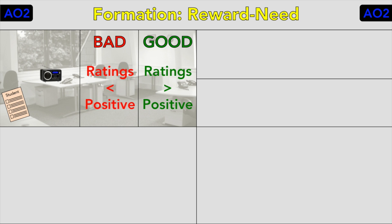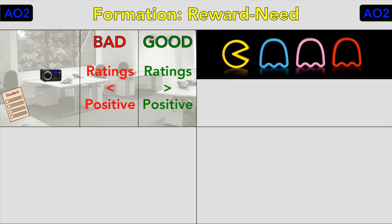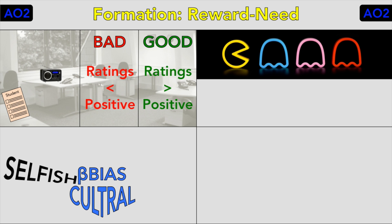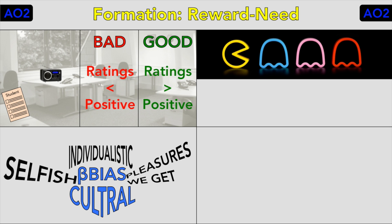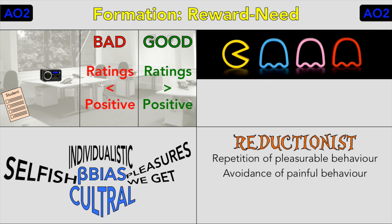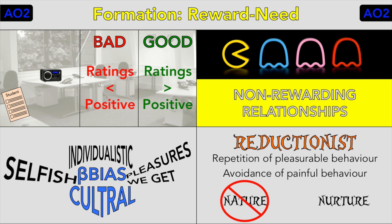In support of operant conditioning, one study found that strangers expressed a greater liking when rewarded by being successful in a game-like task. However, this theory can be criticised for beta cultural bias as it ignores differences between cultures — it implies a selfish nature, making it more appropriate for individualistic cultures than collectivist ones, where emphasis is placed on what is best for the group. The theory is also reductionist, reducing relationships down to the repetition of pleasurable behaviour and the avoidance of painful behaviour, ignoring nature — for example, evolutionary instincts where males may seek fertile females and females may seek resources. Finally, arguably the biggest weakness is that this theory doesn't explain why some relationships are formed even when they are not rewarding.